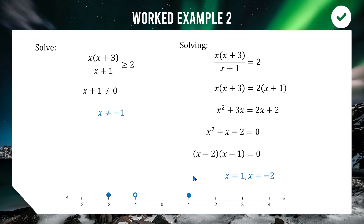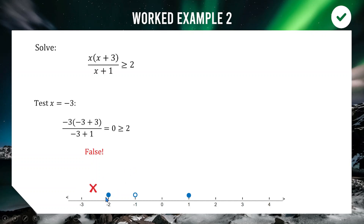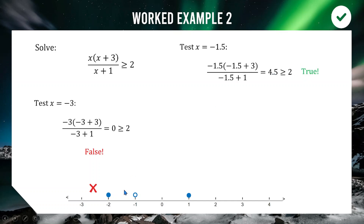Testing x = −3 (left of −2): the numerator becomes (−3)(0) = 0, so 0 ≥ 2 is false — not in solution. Testing x = −1.5 (between −2 and −1): the calculator gives 4.5, and 4.5 ≥ 2 is true — this region is in the solution.